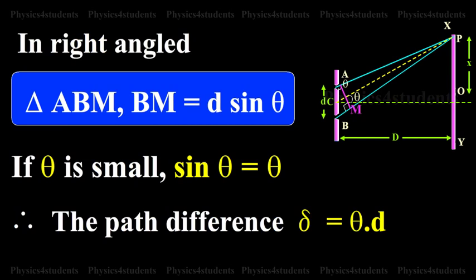In a right-angled triangle ABM, BM is equal to d sin theta. If theta is small, sin theta is equal to theta. Therefore, the path difference delta is equal to theta into d.